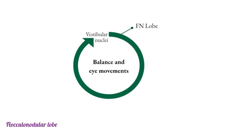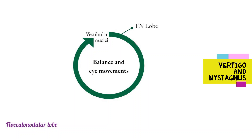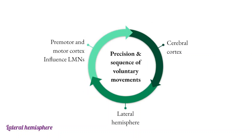The flocculonodular lobe modulates balance and eye movements via connections with the vestibular nuclei at the pontomedullary junction. Patients may develop vertigo and nystagmus as a result of a lesion in this region. In contrast, the lateral hemispheres exert an influence on lower motor neurons via the lateral corticospinal tract.